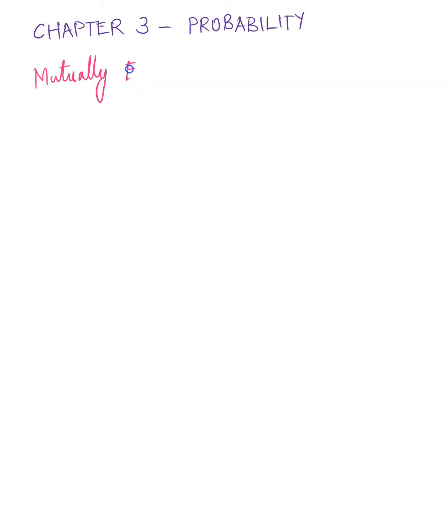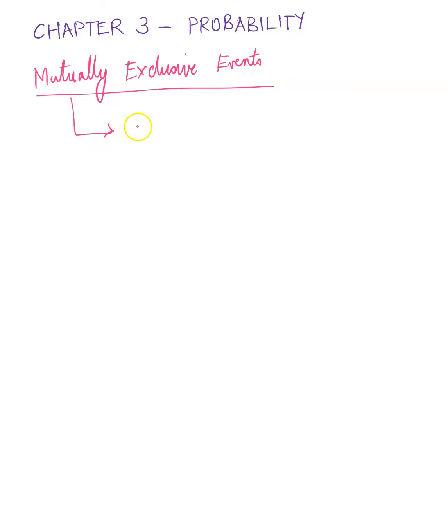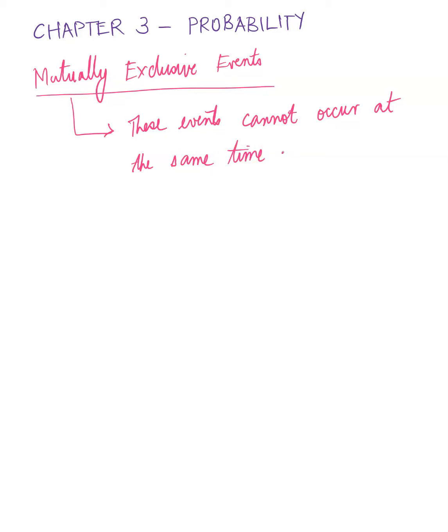Let's start with mutually exclusive events. Again in English you probably can figure out what this means, but let me define it for stats. These events cannot occur at the same time — that is what we mean by mutually exclusive events. So for instance, if I said a nursing student and a male student, are these two mutually exclusive events?